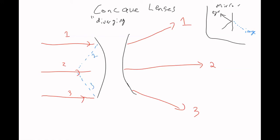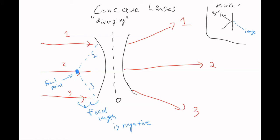The focal point for a concave lens is actually over here on the left side. So if you found the focal length f, it's going to be negative — because if we pretend that the lens is the zero point, then anything to the right of zero is positive and anything to the left is negative.